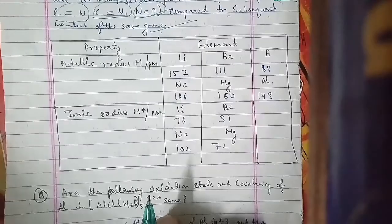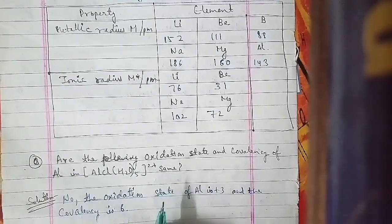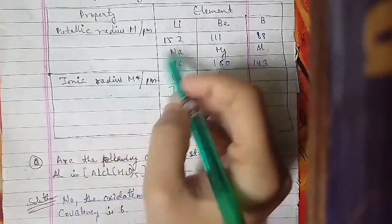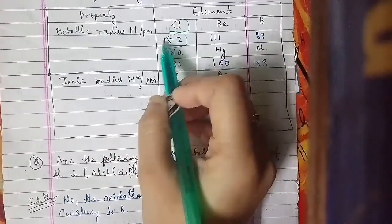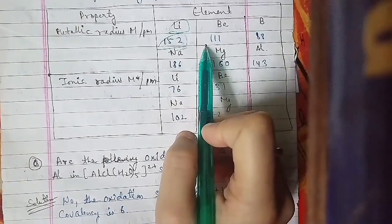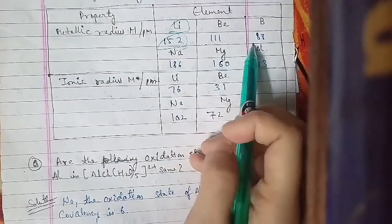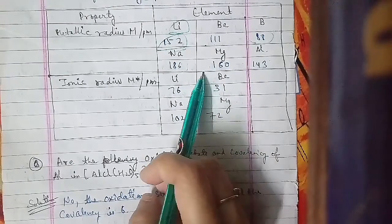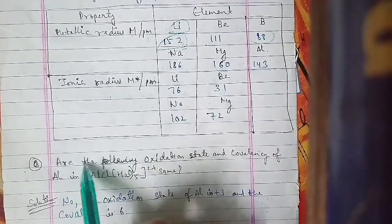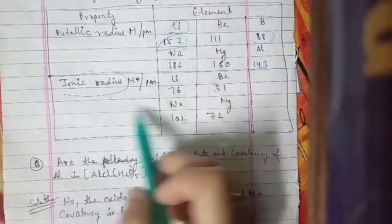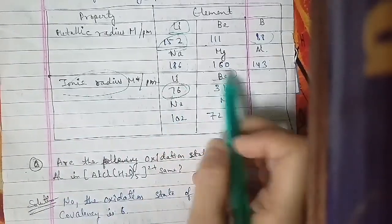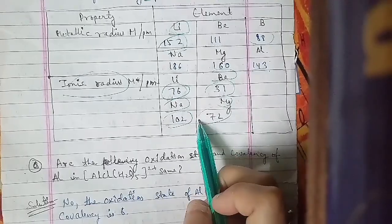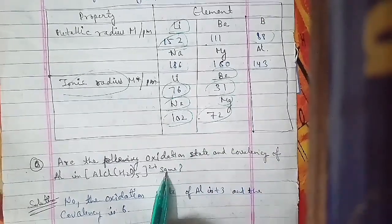Looking at a comparison table: lithium has a metallic radius of 152 pm and an ionic radius of 76 pm; beryllium has a metallic radius of 111 pm and an ionic radius of 31 pm; boron has a metallic radius of 88 pm; sodium has a metallic radius of 186 pm and an ionic radius of 102 pm; magnesium has a metallic radius of 160 pm and an ionic radius of 72 pm; aluminium has a metallic radius of 143 pm.